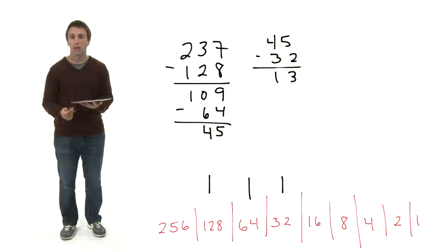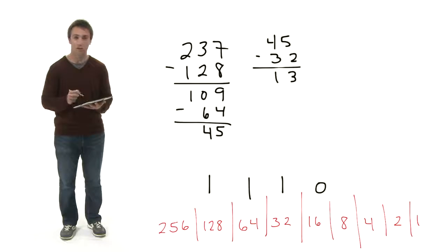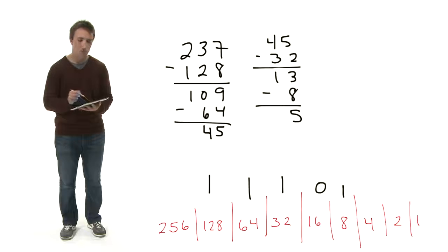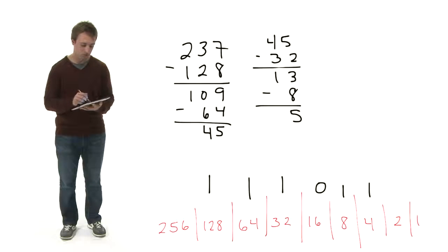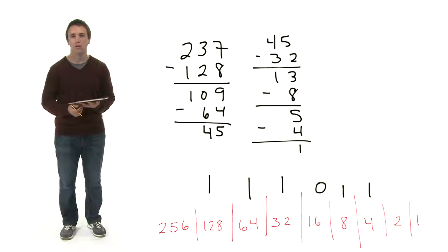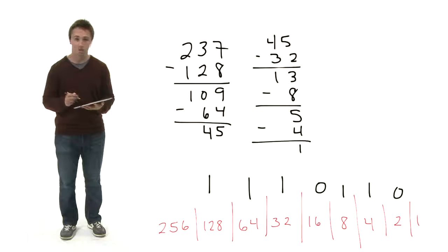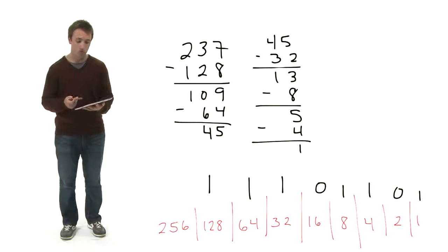Again, the largest power of 2 that's less than 45 is 32, so I put a 1 in the appropriate slot and subtract 32 to get 13. Moving on, I get 8 as the largest power of 2 now — not 16 — so I put a 0 in the 16's place, a 1 in the 8's place, subtract, and get 5. Then 4 is the largest power of 2; I subtract and get 1. Now I can finish off the translation easily: I put a 0 in the 2's place and a 1 in the 1's place. So the result is 1 1 1 0 1 1 0 1.